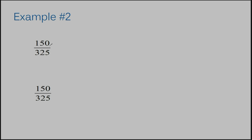One hundred fifty over three hundred twenty-five. We've got some larger numbers in our numerator and denominator, but that's okay — we can still find equivalent fractions. We can multiply by two in our numerator and denominator. One hundred fifty multiplied by two is three hundred. Three hundred twenty-five multiplied by two is six hundred fifty.